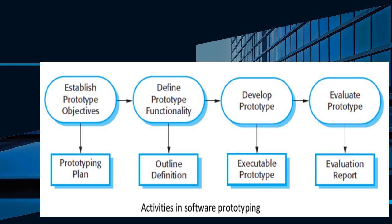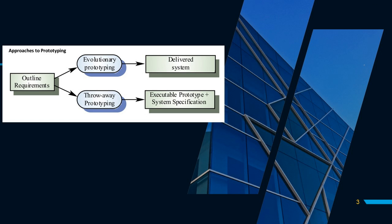Users need time to become comfortable with a new system and to settle into a normal pattern of usage. There are several approaches to prototyping. The two prominent prototypes are evolutionary prototyping and throwaway prototyping. Evolutionary prototyping results in the delivered system, whereas throwaway prototyping results in an executable prototype plus system specification details.